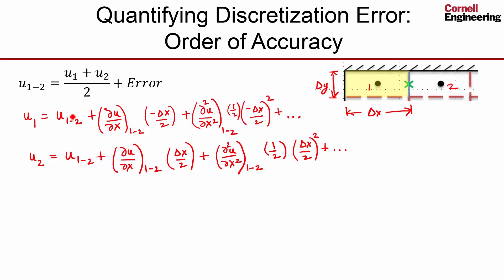And then if I add these two together, that'll give me 2u1,2, twice the value at the face, and that'll give me u1 plus u2. Let me just divide through by 2, and rearranging, I'll get something that looks like that. So I'll get u1,2 equals u1 plus u2 over 2, that's nothing but that term here.